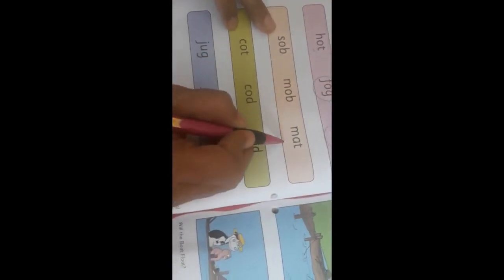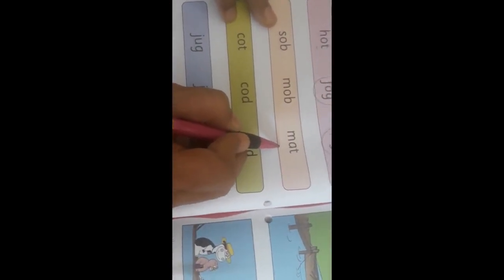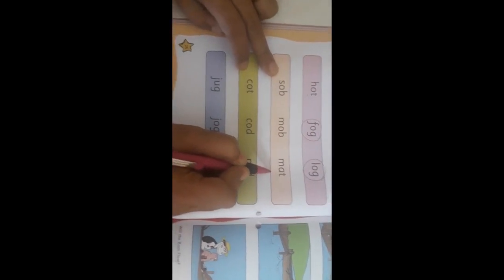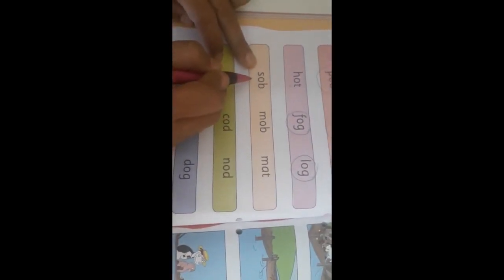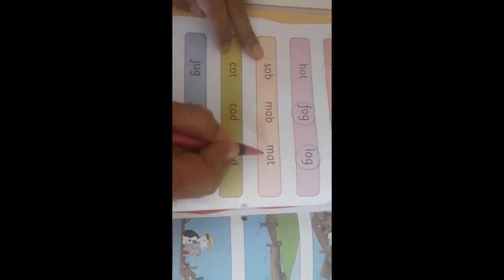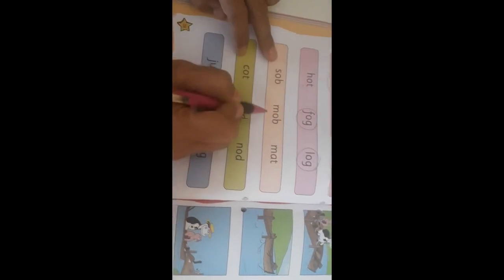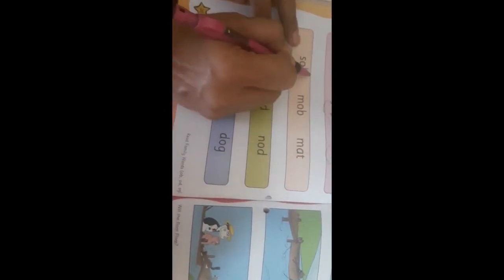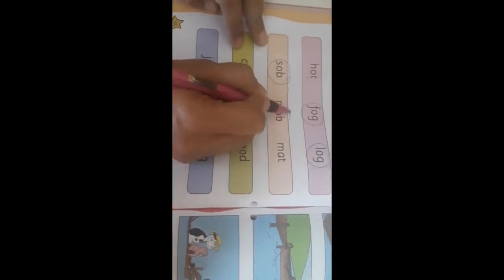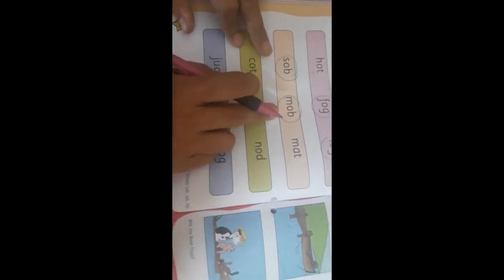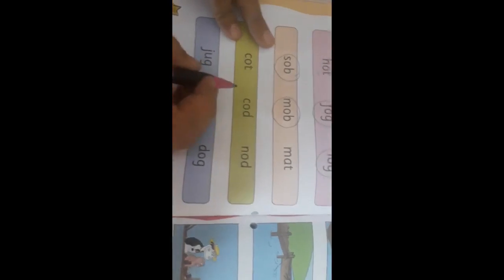Now here sob, mob and mat. Now can you tell me which two words are rhyming? Is mob rhyming with mat? No. Is sob rhyming with mat? No. Is sob rhyming with mob? Yes. So sob and mob we are going to circle because they have similar sound.